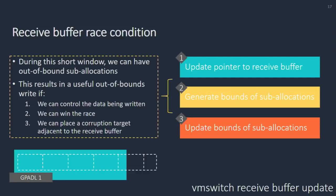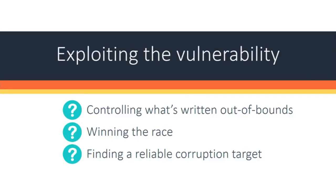That's basically the RCE vulnerability: during the tiny window between those two steps, if you can get a parallel worker thread — because those are the threads writing to the receive buffer — to write to the receive buffer at the exact right time while you're updating it, which is a window of maybe a few hundred cycles, you can actually write data out of bounds in the host OS. In practice, exploiting this requires three things: you need to control the data being written out of bounds; you need to actually win the race; and you need to place a corruption target at a known offset of your receive buffer so that writing out of bounds actually overwrites a critical data structure.